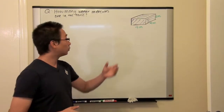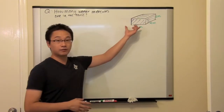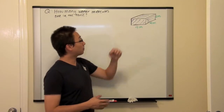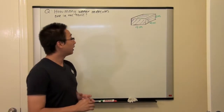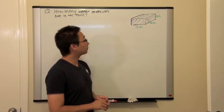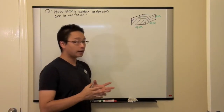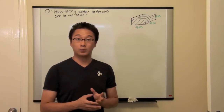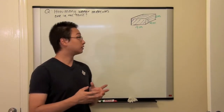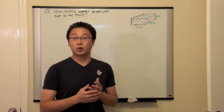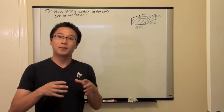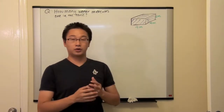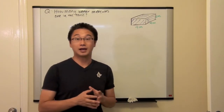So in this question, we can see the tank right here, which is a rectangular tank. We have the dimensions — the length, the width, and the height of the tank. And the question asks: how many water molecules are in the tank?